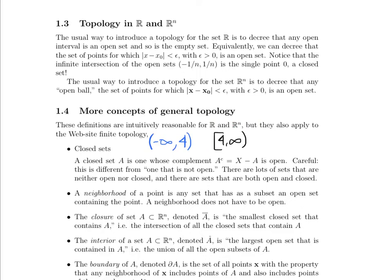What other words do we want to use? Neighborhood. When we talk about the neighborhood of a point, it's any set that has a subset that is an open set containing the point. So a neighborhood itself doesn't have to be open. Again, a neighborhood of a point is any set that has as a subset an open set that contains our point.